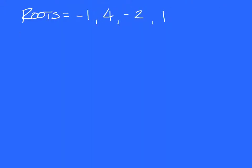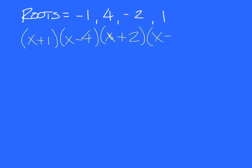Four roots. So we're going to do the opposite when we put them in. It's going to be x plus 1, x minus 4, x plus 2, and x minus 1. When you have four of them, especially if one of them isn't zero, you need to multiply the first two together and then the last two to make it easy on you.